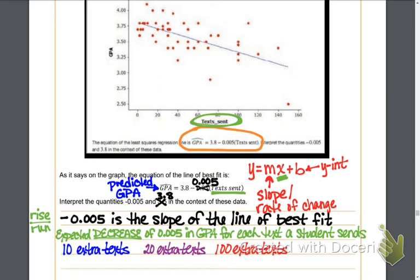This is where that rate of change, that slope, comes in really handy. I can predict the decrease in a student's GPA for an extra 10 texts by taking those 10 text messages sent and multiplying them by our slope of negative 0.005.